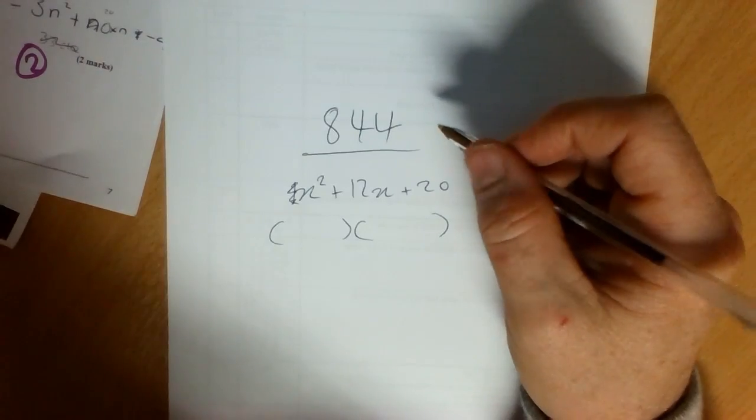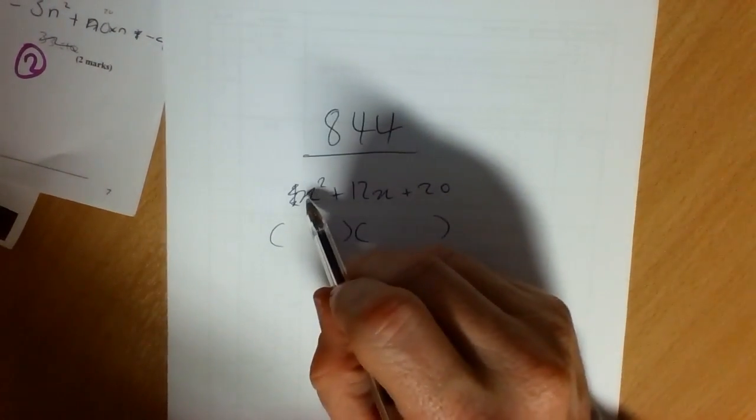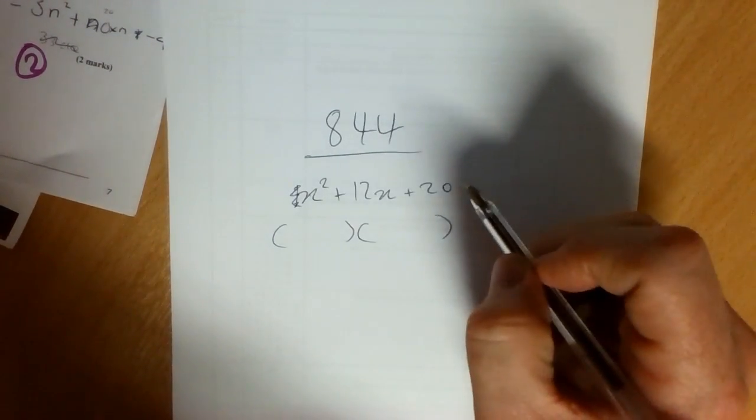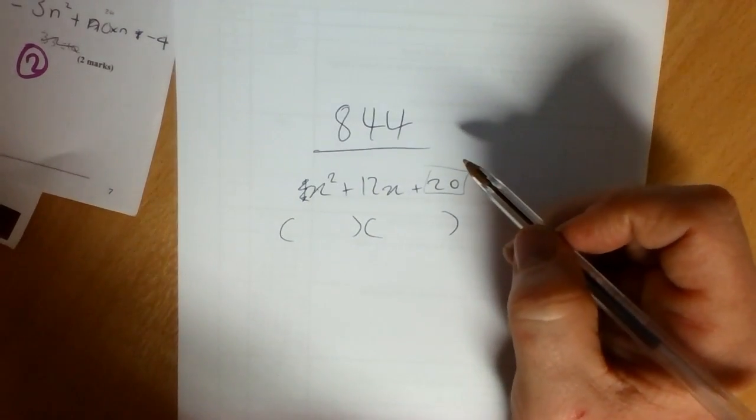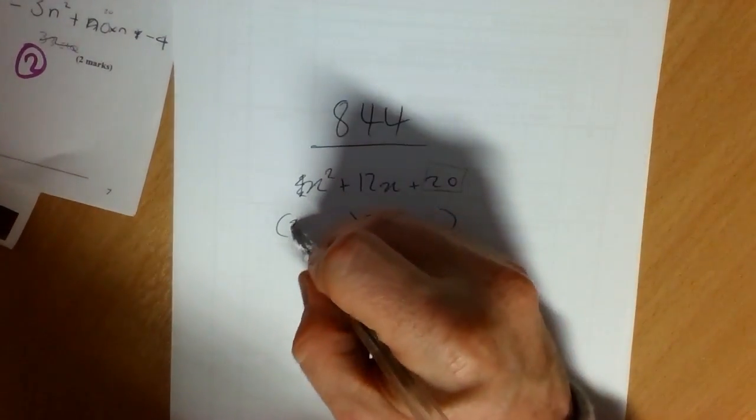When the coefficient of x squared is 1, and when it's just x's, x business, x squared business and constants on the end that don't depend on x, you just do it by trial and error.